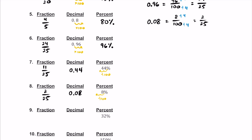For number 9, we have 32%. We can go to a fraction first this time, just to mix it up. Percents are per 100, so we can take this 32 and put it over 100. Then we can divide both by their GCF, which happens to be 4. 32 divided by 4 is 8, and 100 divided by 4 is 25. So the fraction, when most simplified, is going to be 8 over 25.